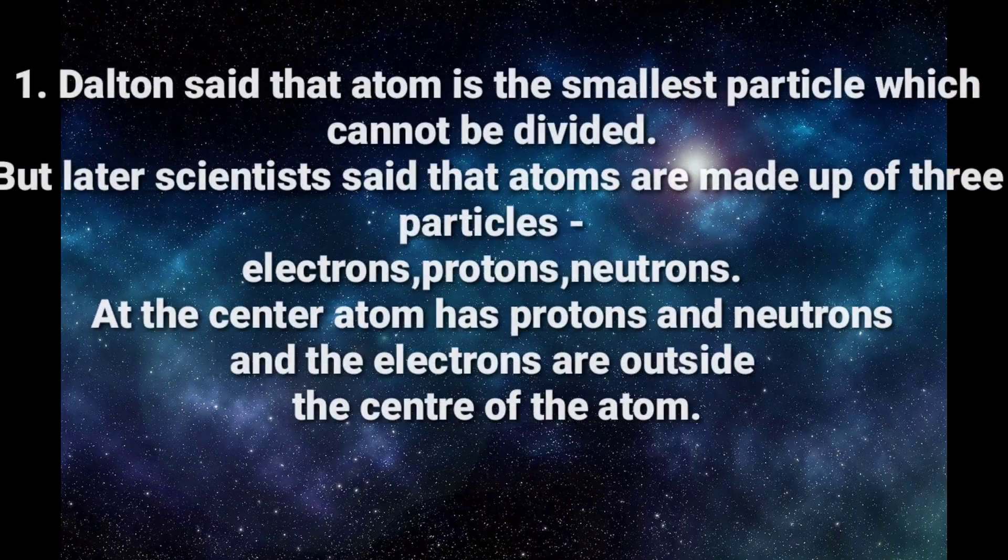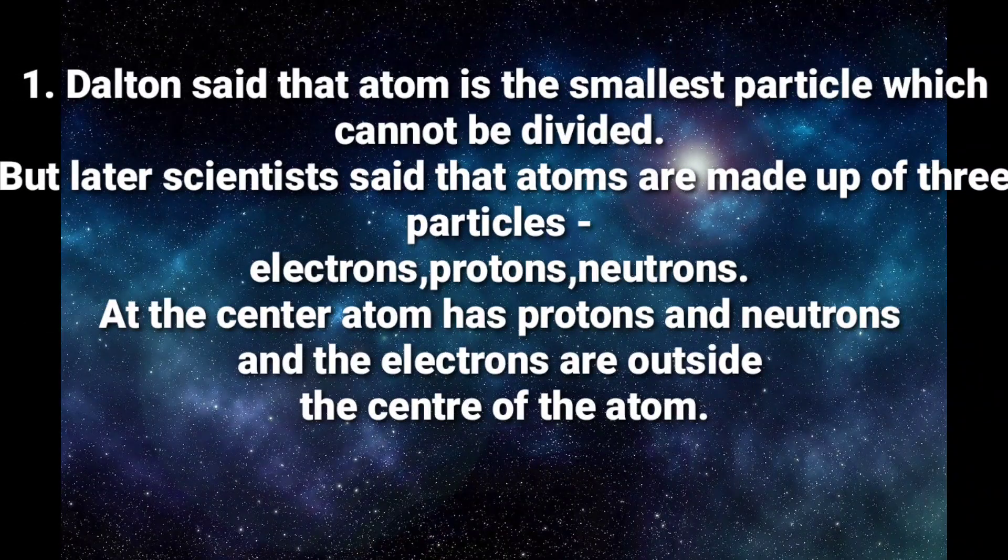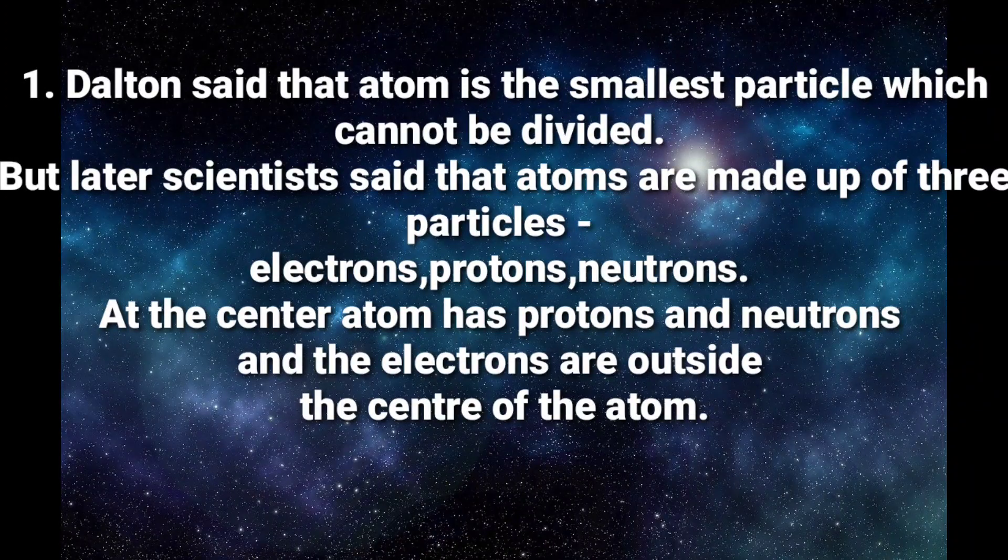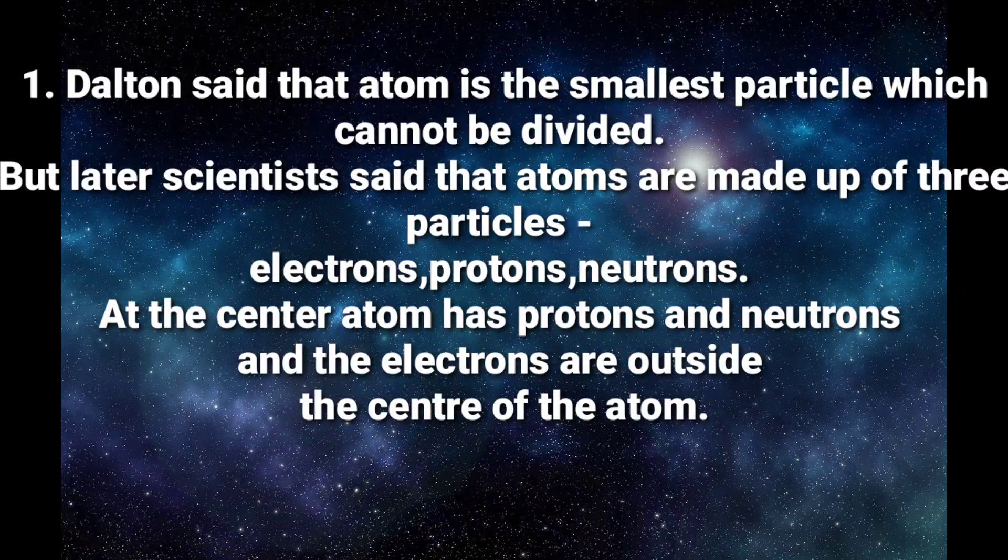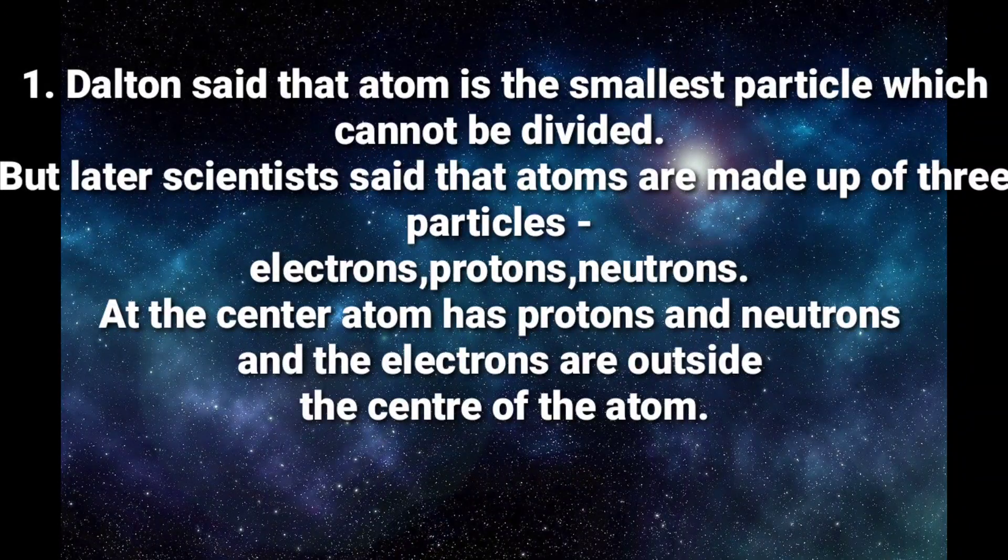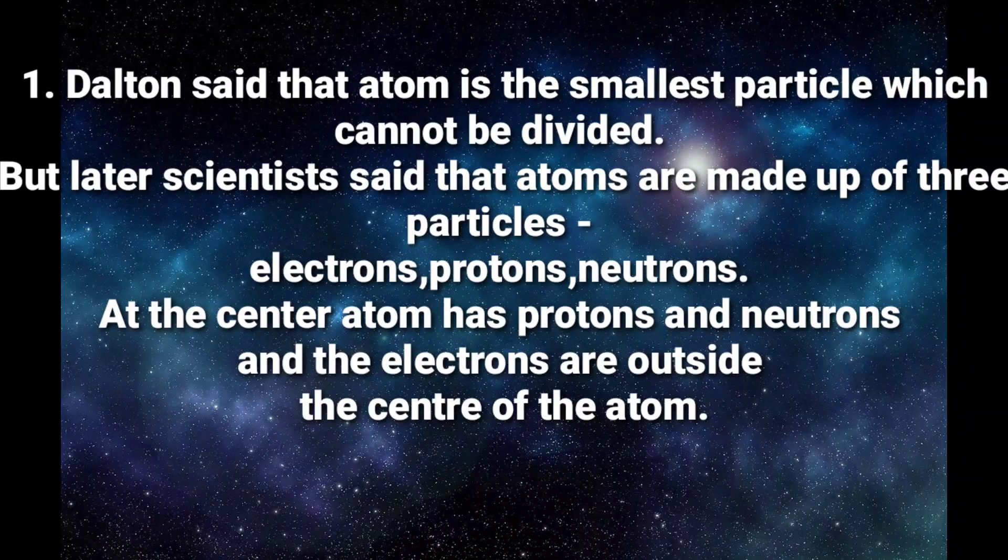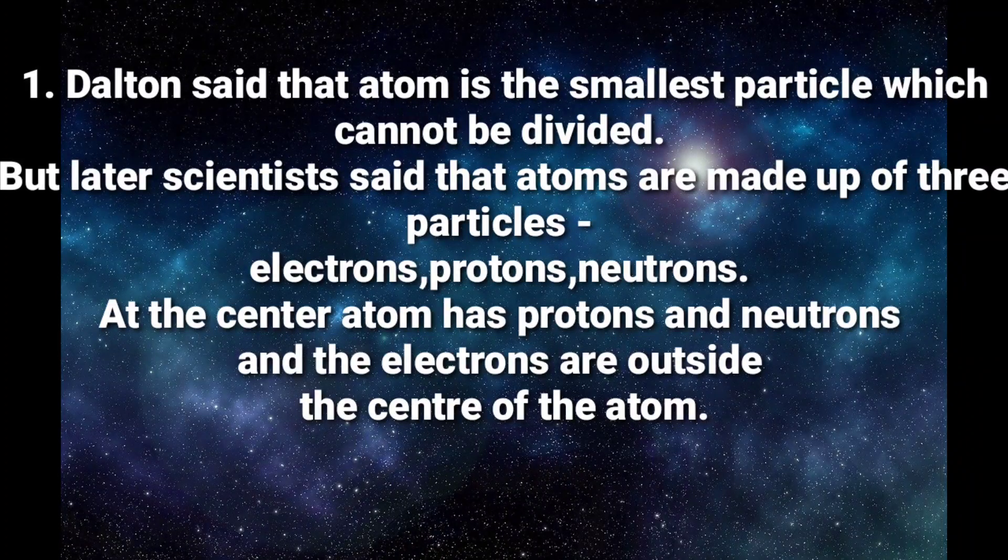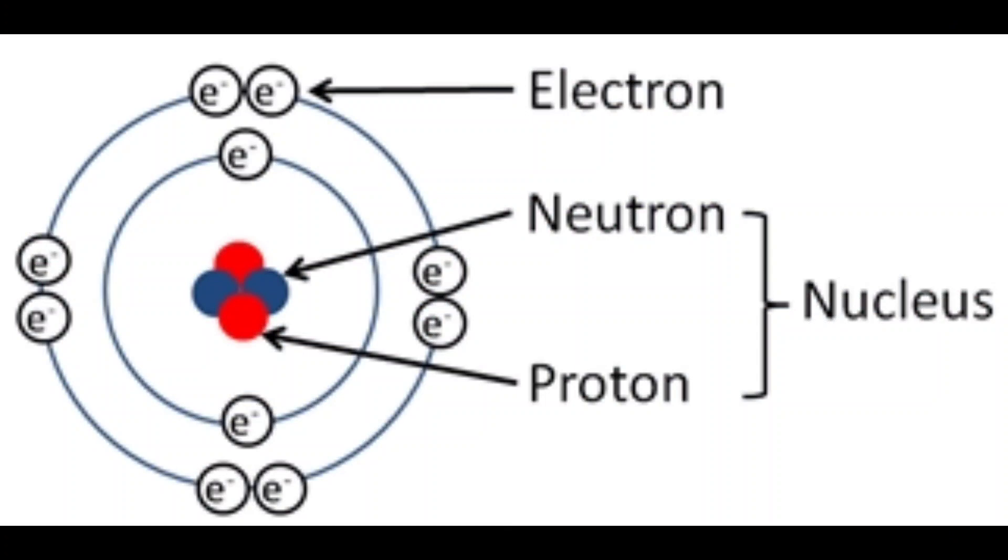Number 1. Dalton said that atom is the smallest particle which cannot be divided. But later scientists said the atoms are made up of three particles: electrons, protons and neutrons. At the center of atom are proton and neutron, and the electrons are outside the center of the atom.